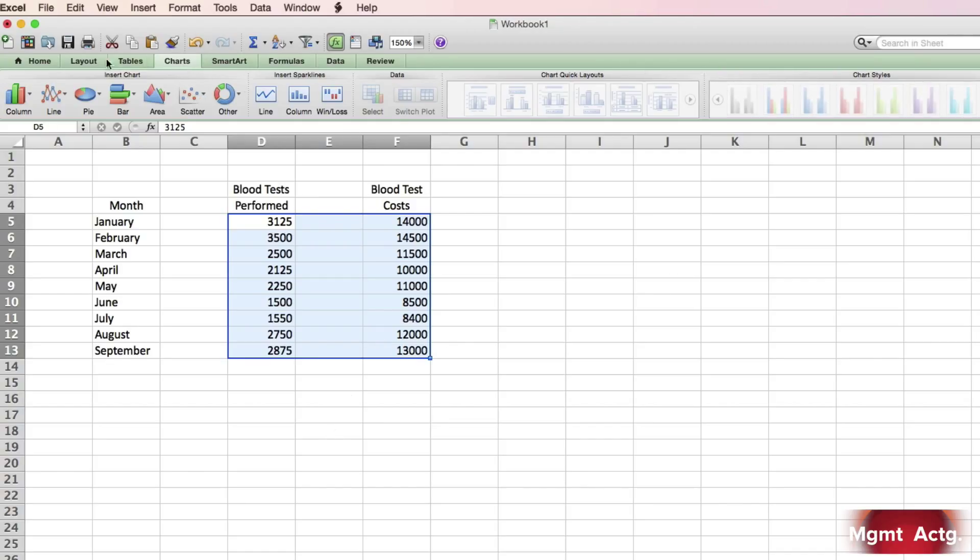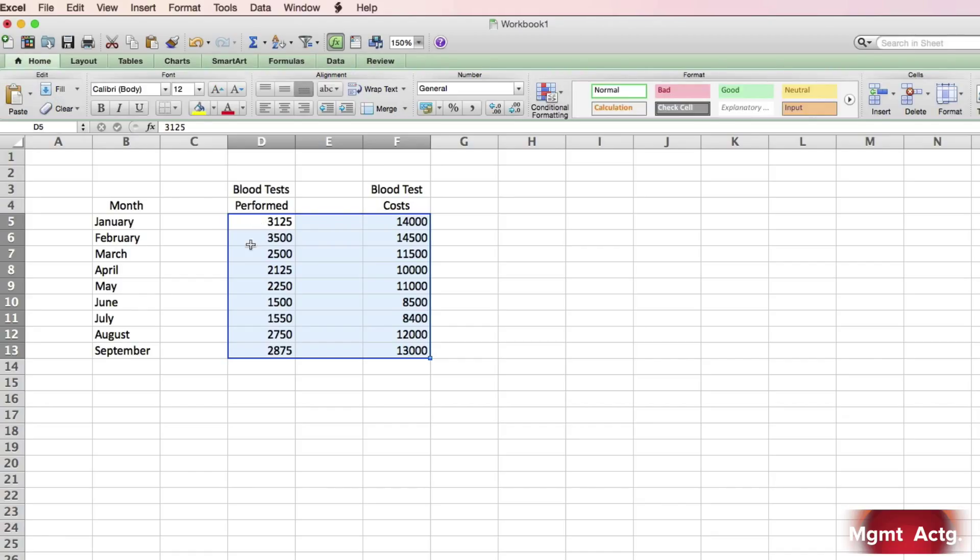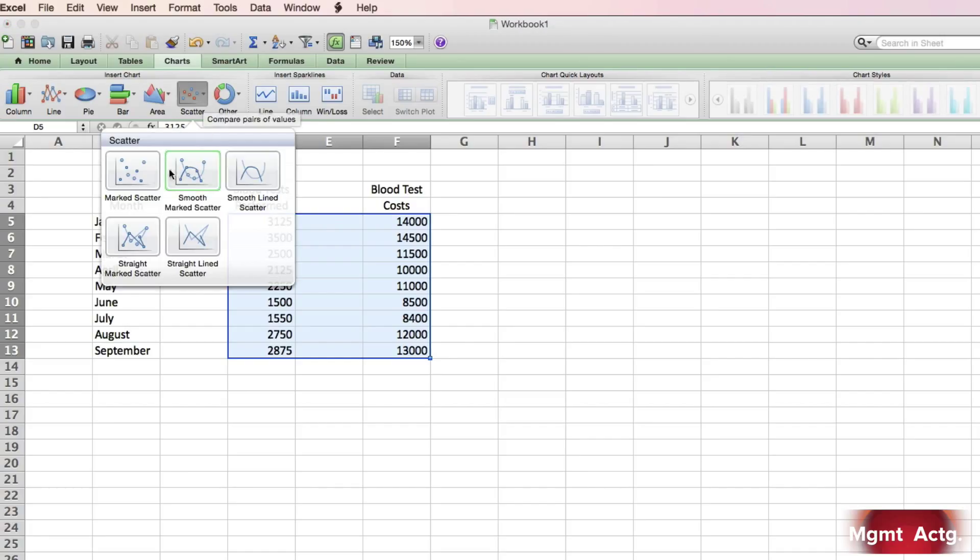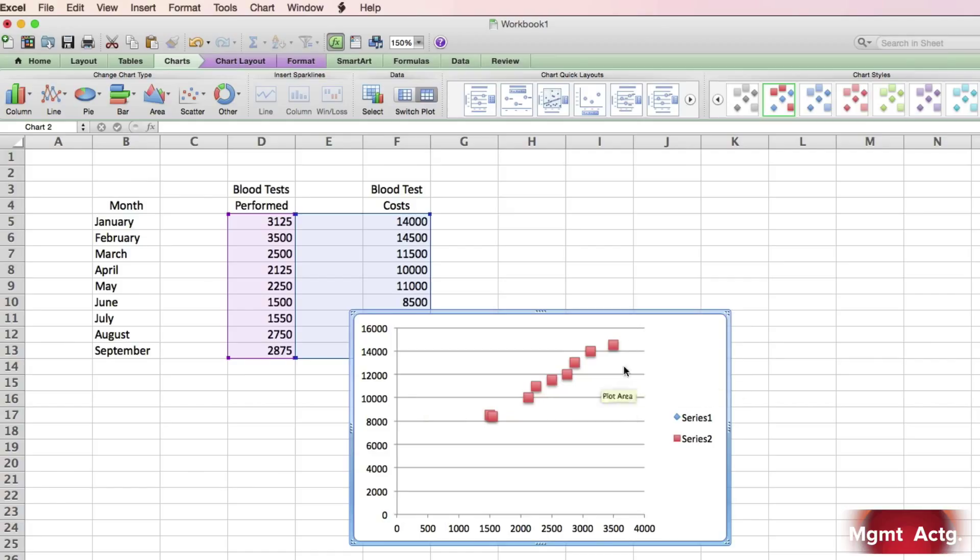Click up here under scatter, across the trough. You see these little, you may be over here at home. So all you have to do is click on charts, and your charts will appear here. Click down on scatter, and we're just doing the first one, the marked scatter, and there we go.